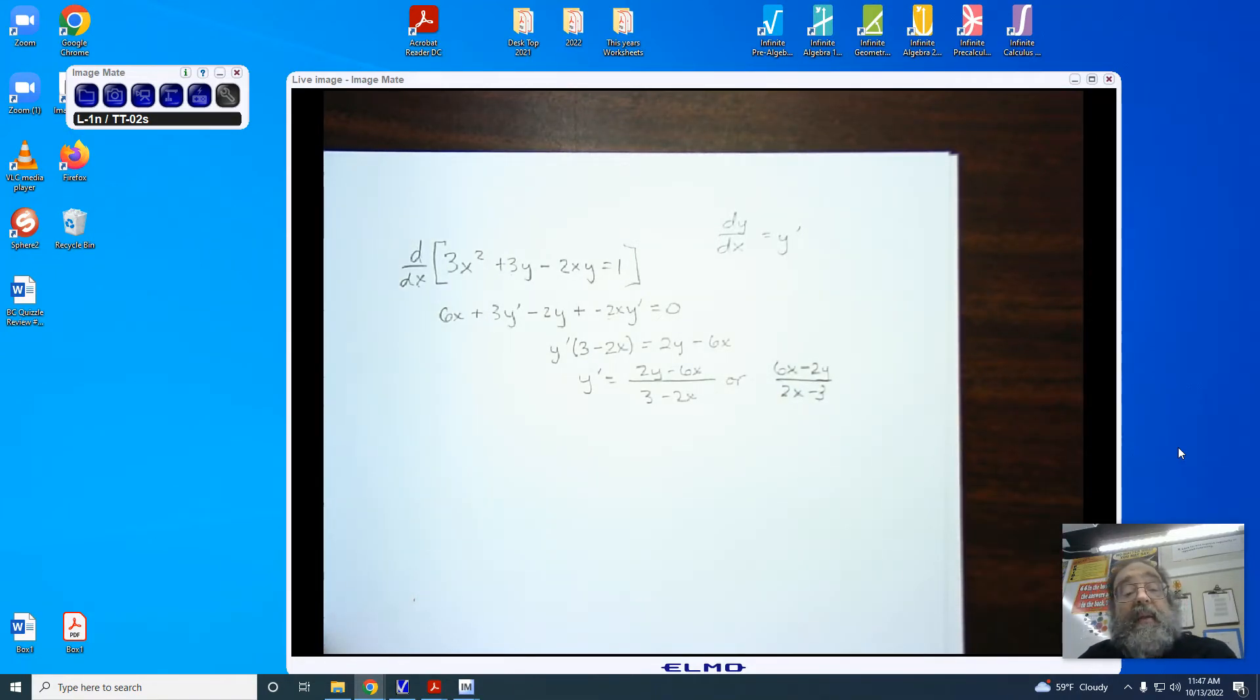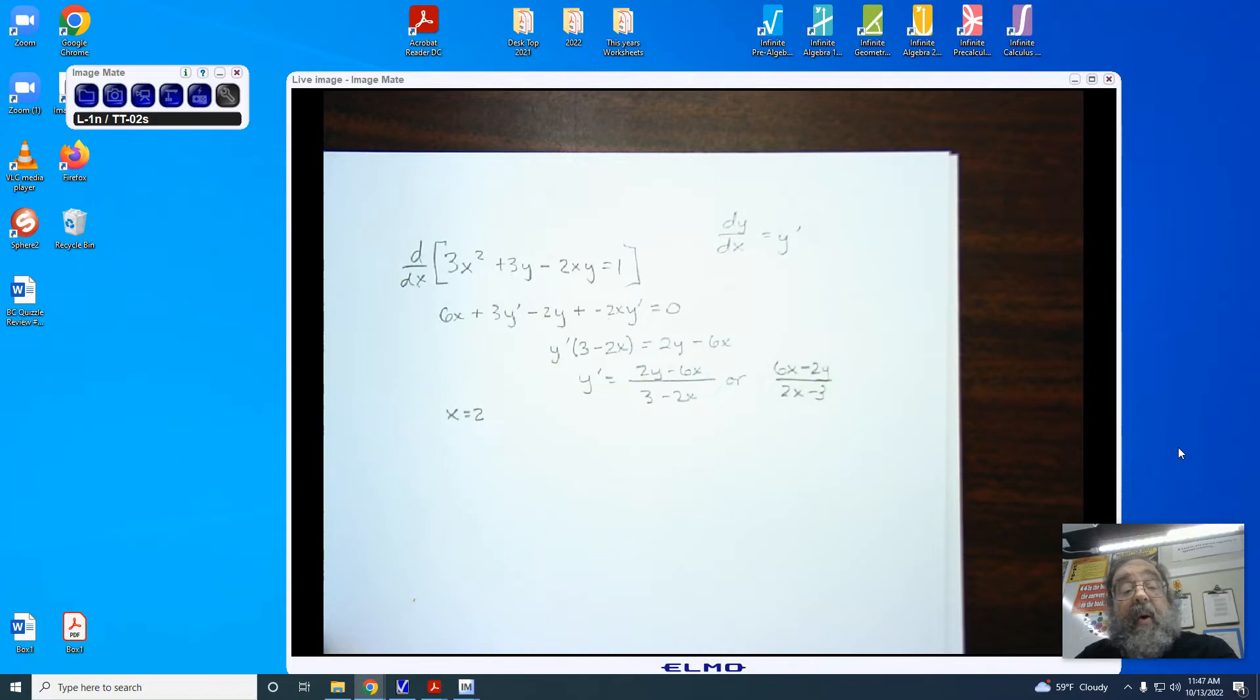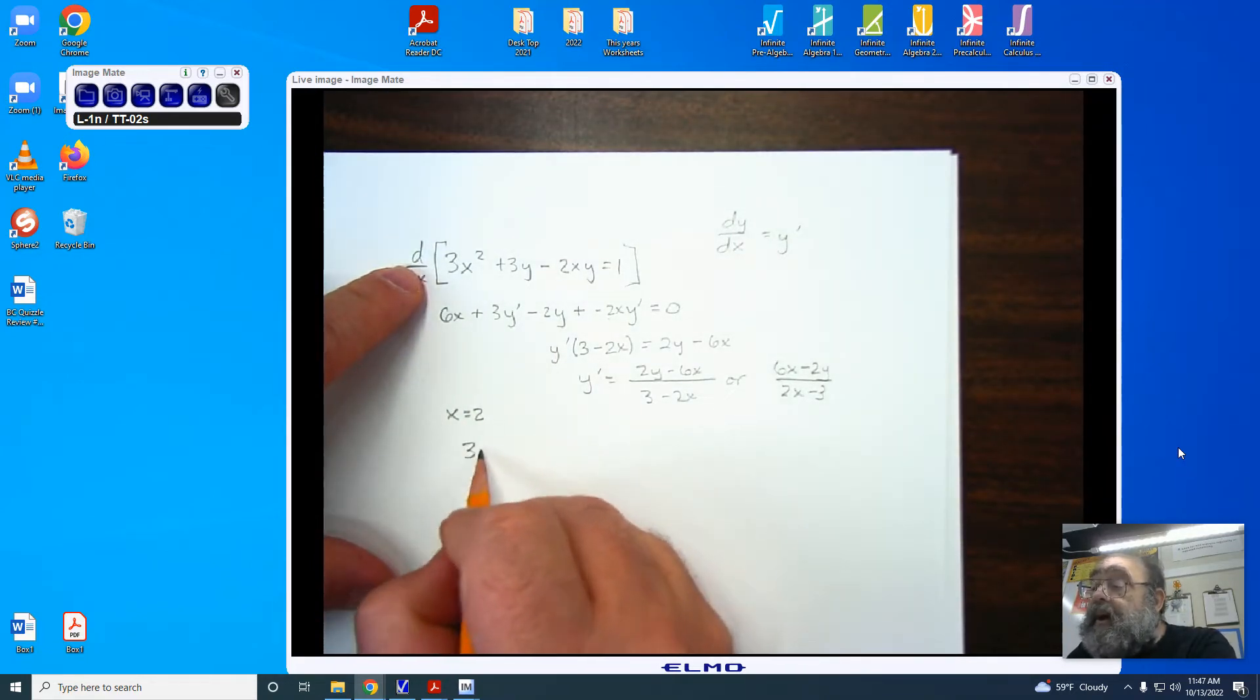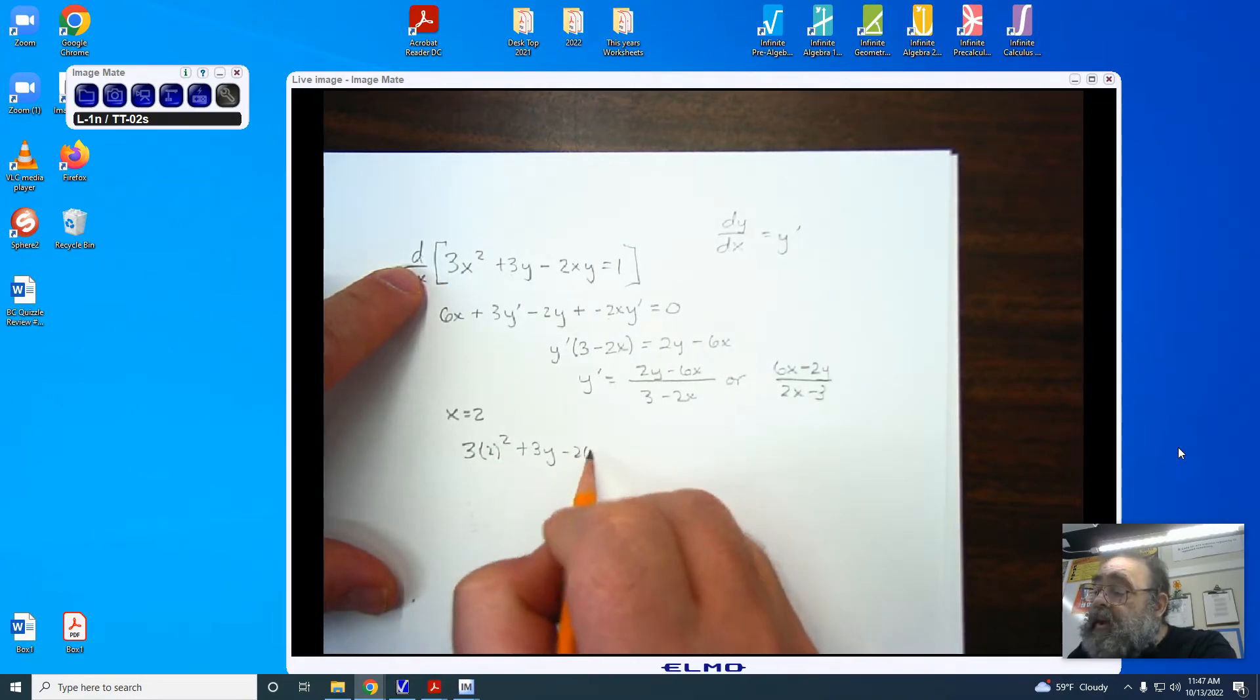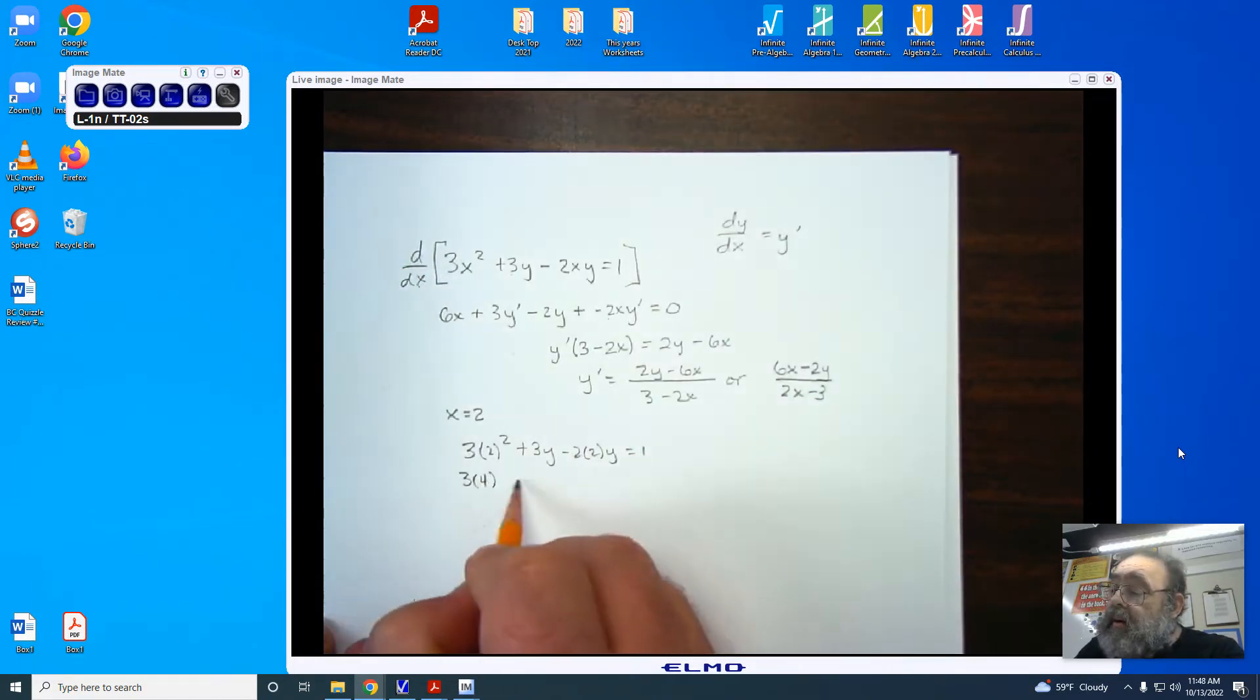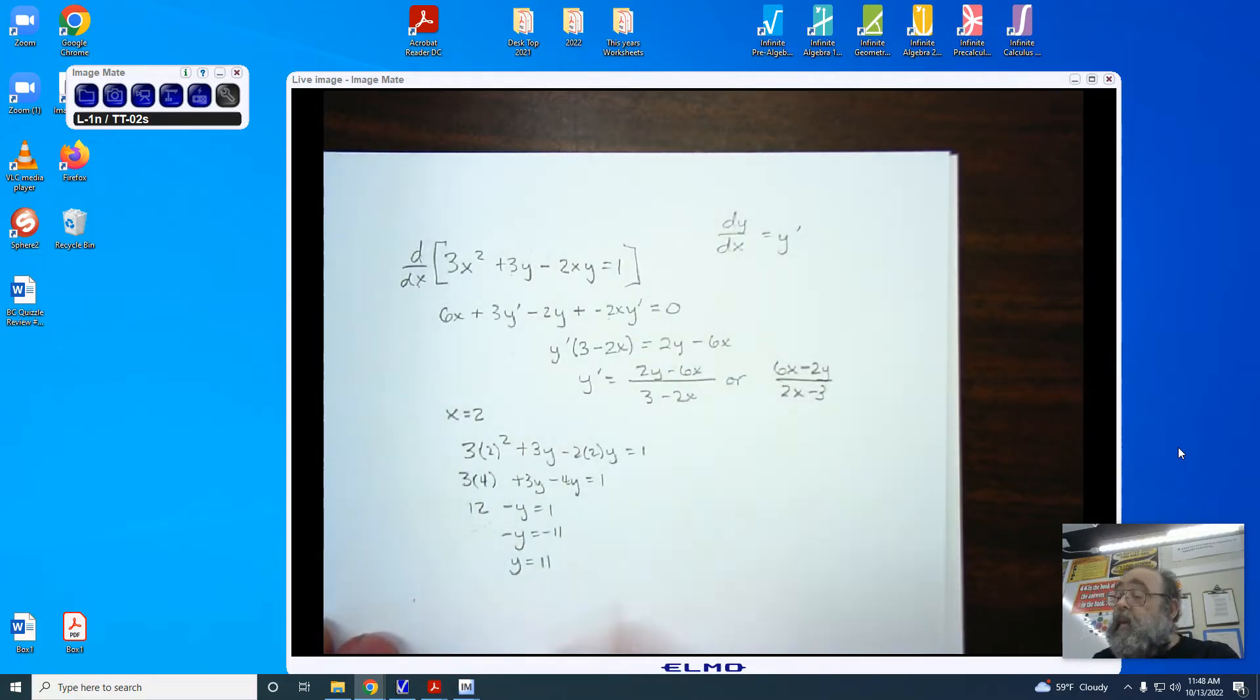If I'm trying to find the equation of the tangent line, let's say at x equals 2, the first thing that I want to do is figure out what is the corresponding y value. They only give me an x. So I take that point, the x value, and I plug it into the original equation. This requires us to follow our order of operations and be very careful. We end up getting 3 times 4 plus 3y minus 4y equaling 1, 12 minus y equals 1, minus y equals negative 11, y equals 11. We now have the point.